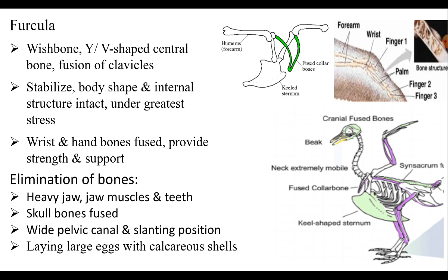Some bones have been eliminated in the bird endoskeleton. Birds lack heavy jaws and jaw muscles with teeth. The skull bones are completely fused, very thin, and pneumatic. The presence of a wide pelvic canal and slanting position helps the bird to lay larger eggs with calcareous shells.